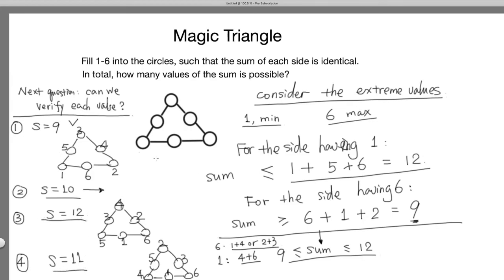So for all these values, sum has to be greater than or equal to 9, less than or equal to 12. Every value is possible to find a magic triangle. So how many values of the sum are possible? It's actually 9, 10, 11, 12. There are 4 possible ways.